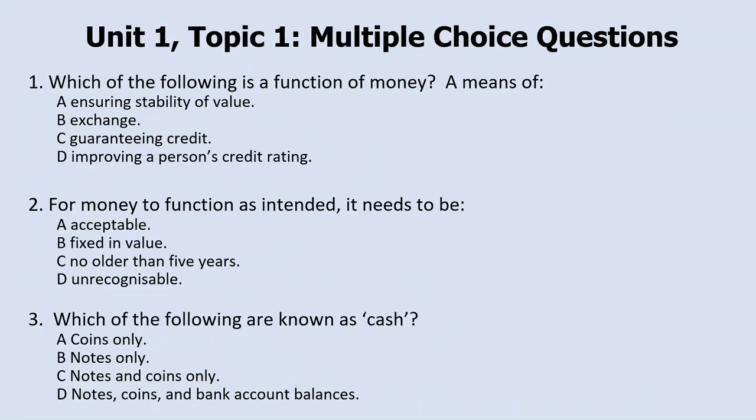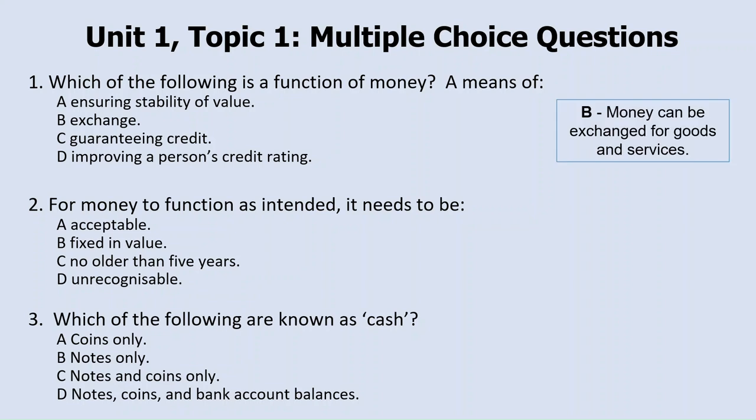On the screen are three multiple choice questions to test your understanding of this topic. Question one: which of the following is a function of money? Is it a) a means of ensuring the stability of value, b) a means of exchange, c) a means of guaranteeing credit, or d) a means of improving a person's credit rating? The answer to question one is b — money can be exchanged for goods and services, therefore it is a means of exchange.